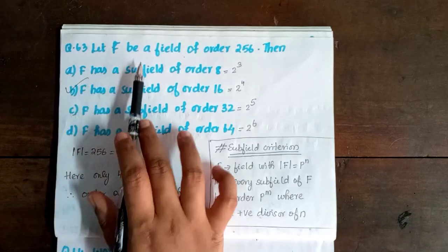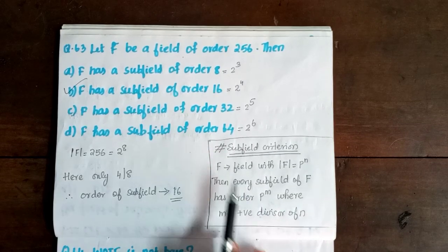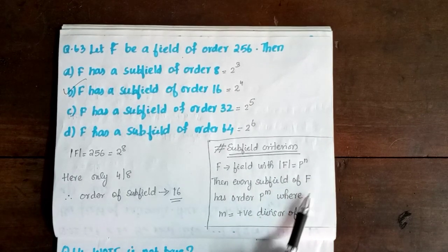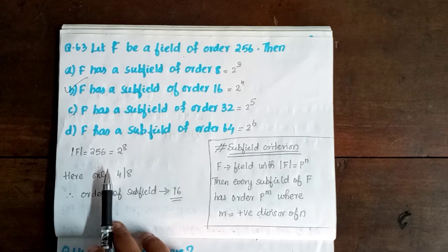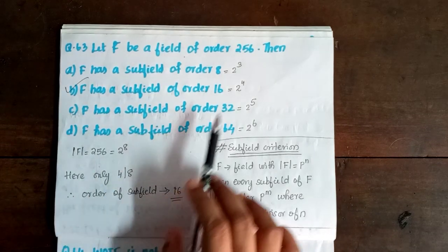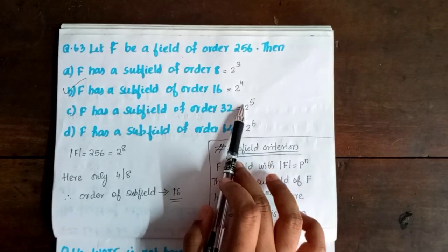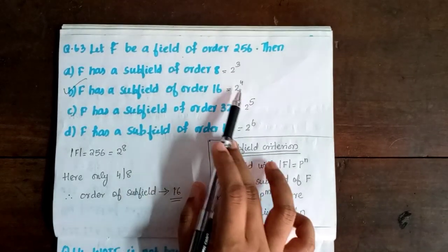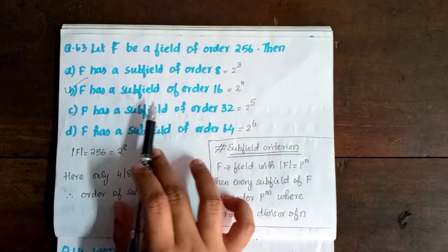Next, question 63: Let F be a field of order 256. Which of the following options is correct? If F is a field with order p raised to n, every subfield of F has order p raised to m where m is a positive divisor of n. Here order of F is 256 equals 2 to the power 8, so n equals 8. The divisors of 8 give subfield orders: 2^1=2, 2^2=4, 2^4=16, 2^8=256. Since 4 divides 8, the subfield of order 16 equals 2^4 exists. Therefore option B is the correct answer.